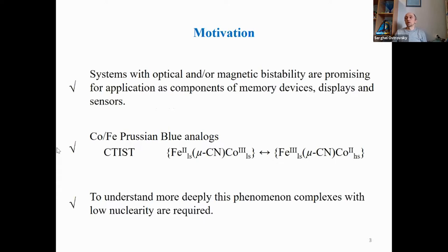These compounds consist of iron-cobalt units and manifest metal-to-metal charge transfer transition in the visible range. This transition is accompanied by a transformation of diamagnetic low-spin iron-2, low-spin cobalt-3 dimers into paramagnetic low-spin iron-3, high-spin cobalt-2 units. To create complexes with better properties useful for practical application, one needs to understand which process governs the charge transfer-induced spin transition, and for this purpose, complexes with lower nuclearity, preferably dimeric complexes, are required.